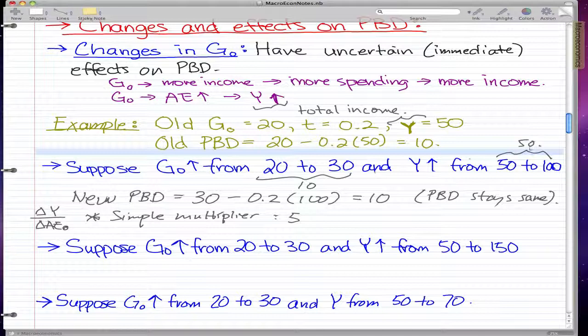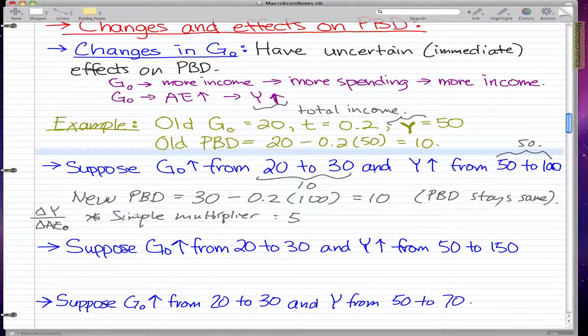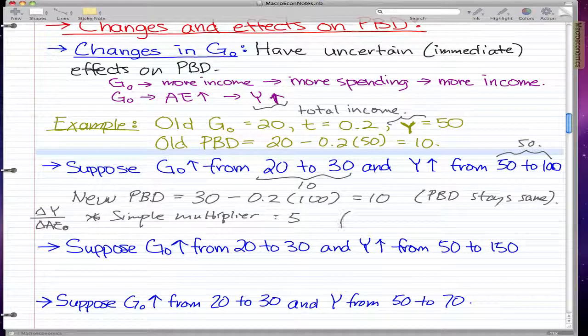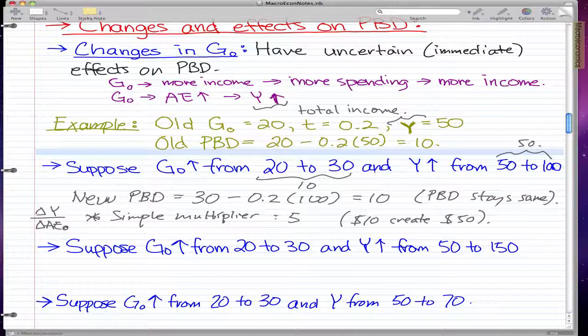We know already that there's a change of 50. So taking 50 divided by 10, we get 5, which is our simple multiplier. This implies that the government spending $10 creates $50 for the economy.